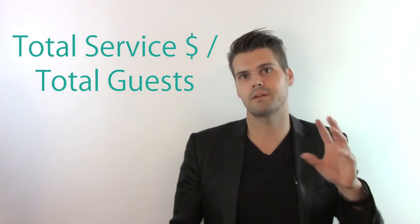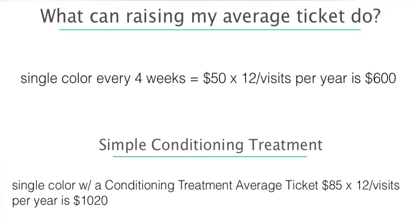Average ticket is very simple to figure out — you basically take your total services for the day and divide them by the number of guests. So that $50 client is now coming in 12 visits a year, making her a $600 client. The biggest thing we can do to be a successful stylist is to upgrade that guest — whether it's a treatment in your shampoo bowl, some kind of color upgrade, or any little upgrade that is going to benefit your guests and develop a relationship so they come back quicker.